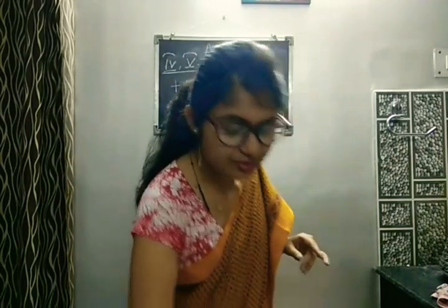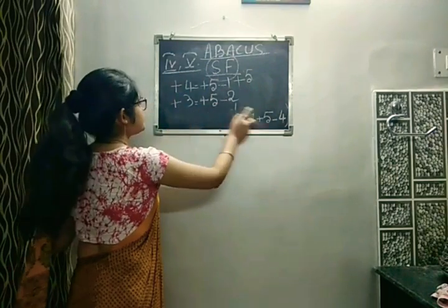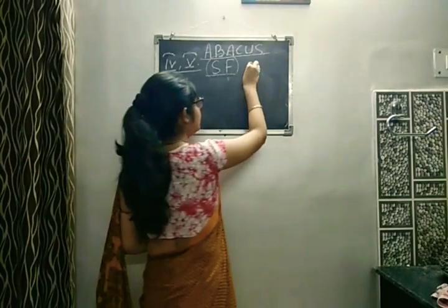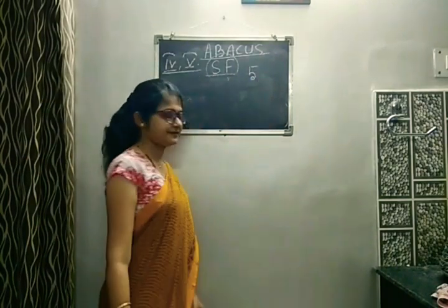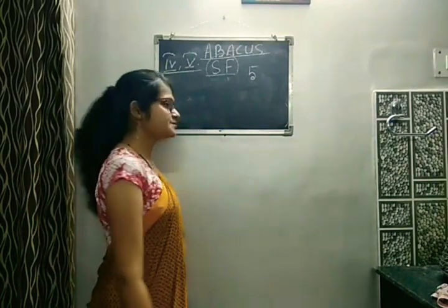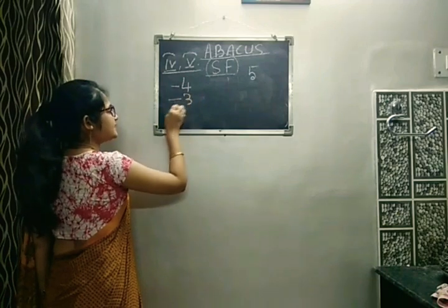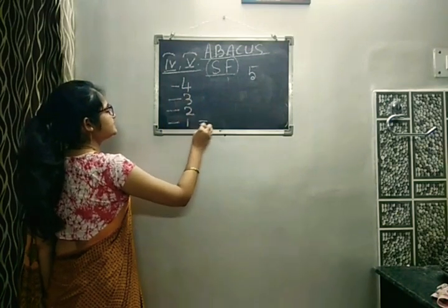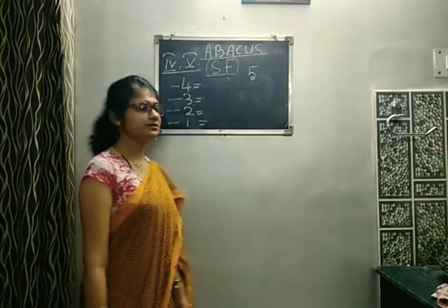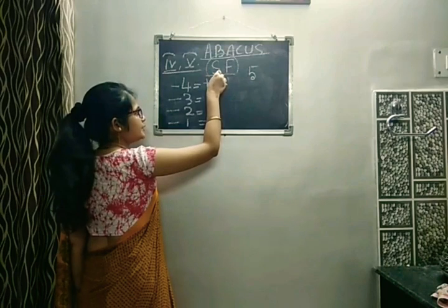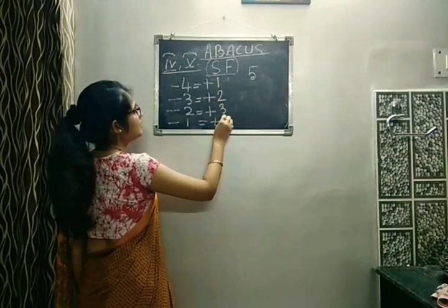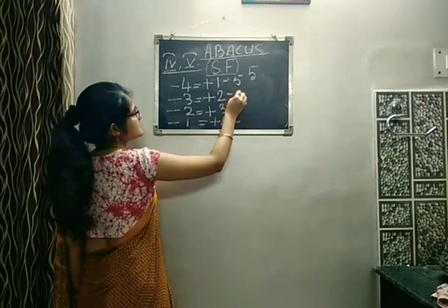After doing the addition formulas, we move to the minus formula. For minus formula also, we have the same common friend, 5. The sign still starts with plus. But there is a little change — the best friends are going to come in front, and the common friend is going to go back with a minus sign.